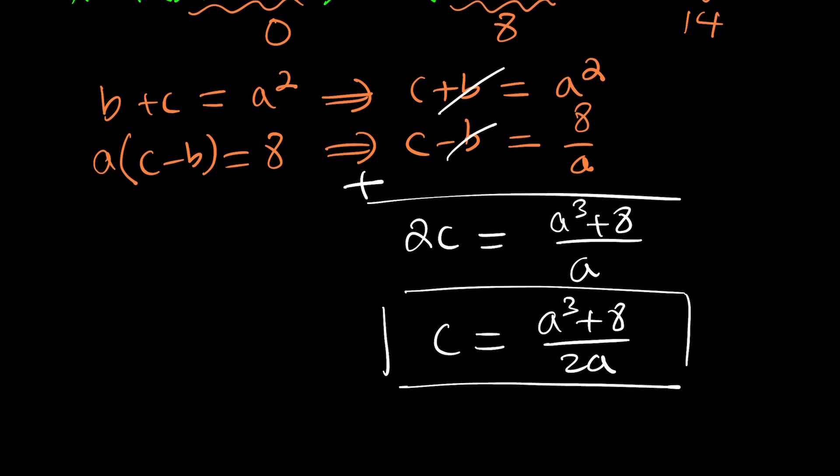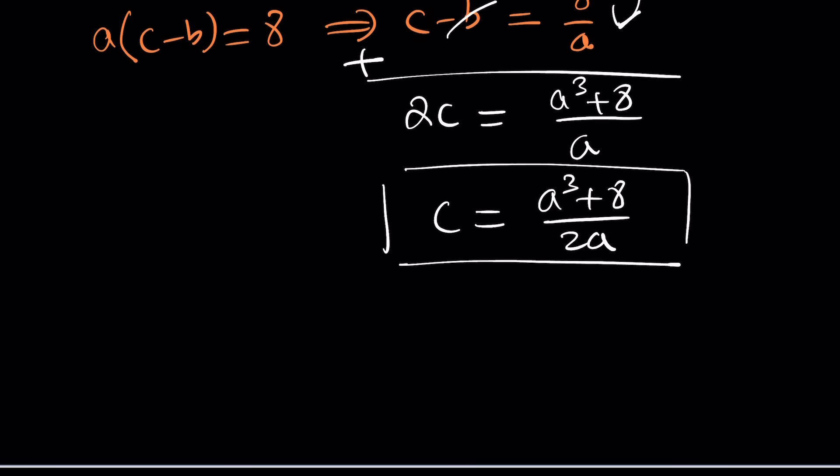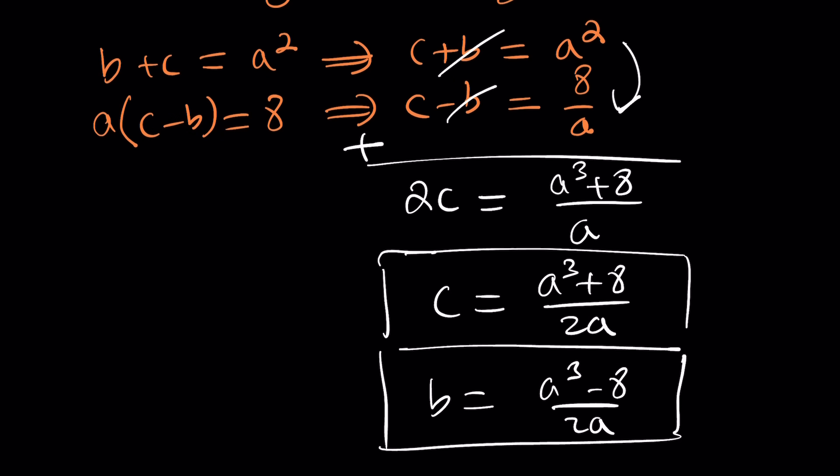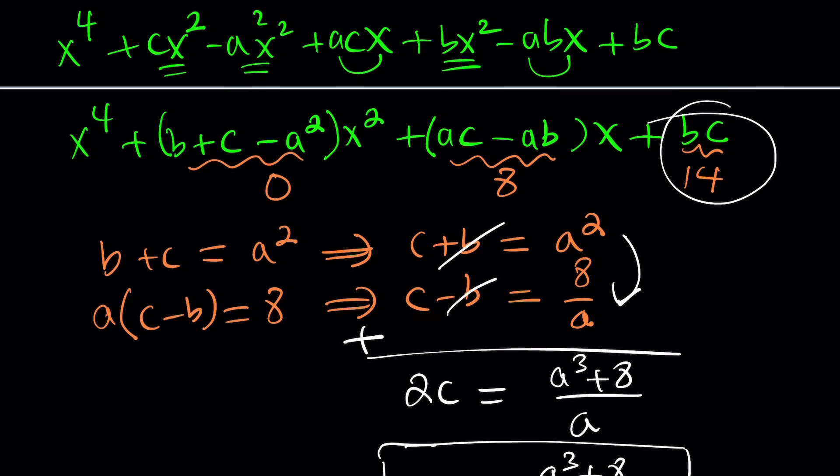And if you plug it in, or if you subtract these equations, you're going to notice that b can be written as a cubed minus eight divided by 2a. So, there is that kind of symmetry between the b and the c. Now, they're kind of like conjugates, which is a good thing.